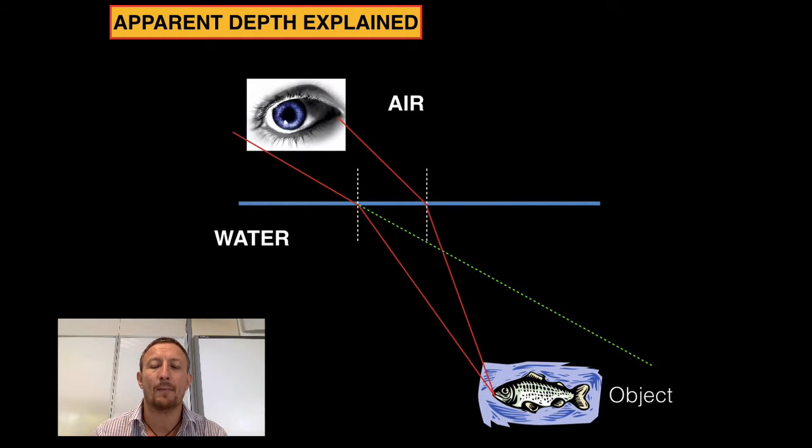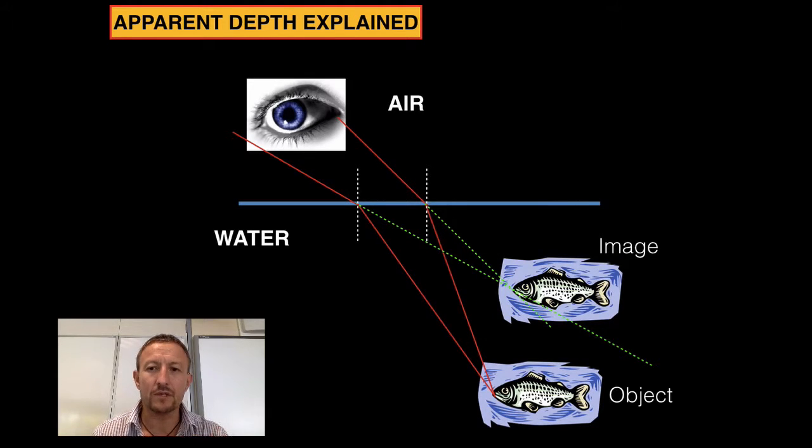What we actually have to do is track back from each of the refracted rays. I track back with the first one, I track back with the second one, and you can see the two points cross. The point where they cross is where our virtual image is going to be formed, and as you can see our virtual image is a lot higher than the actual object.